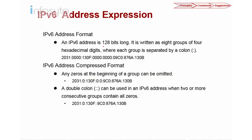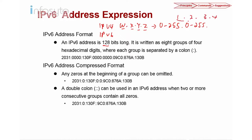Since IPv6 is 128 bits, writing the address will be quite long. Comparing IPv4 with IPv6: in IPv4, each byte represents values from 0 to 255, separated by dots, and we have 4 such groups. In IPv6, we represent the address using hexadecimal numbers from 0 to F. We have 4 hexadecimal digits in one group and 8 groups altogether. Each hexadecimal digit is represented by 4 bits, giving us 128 bits total.